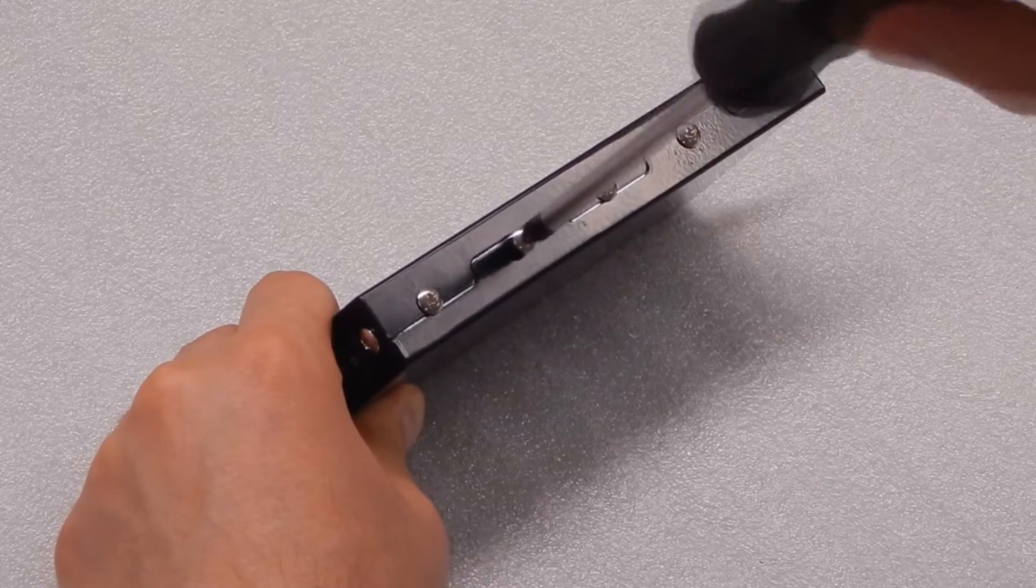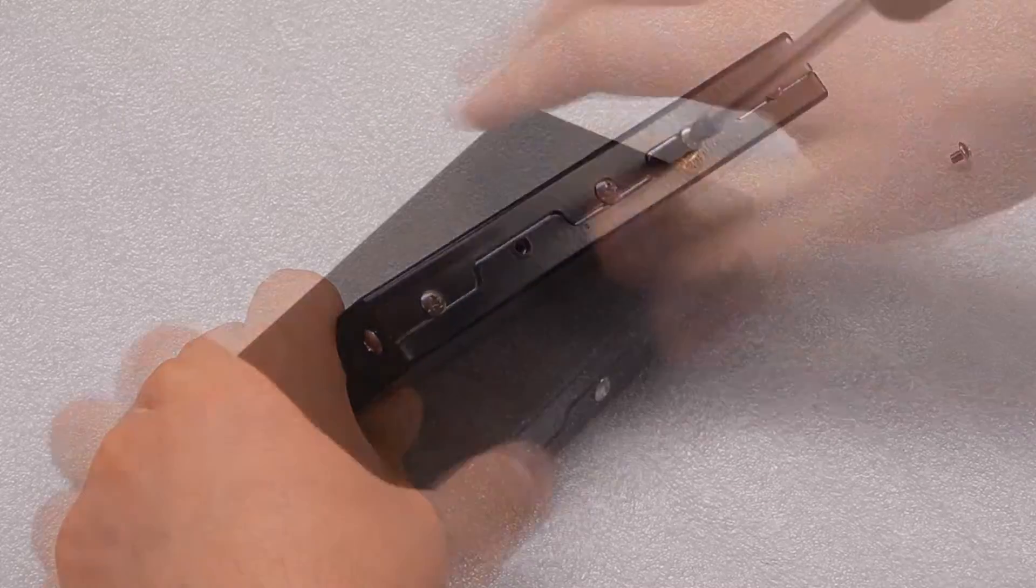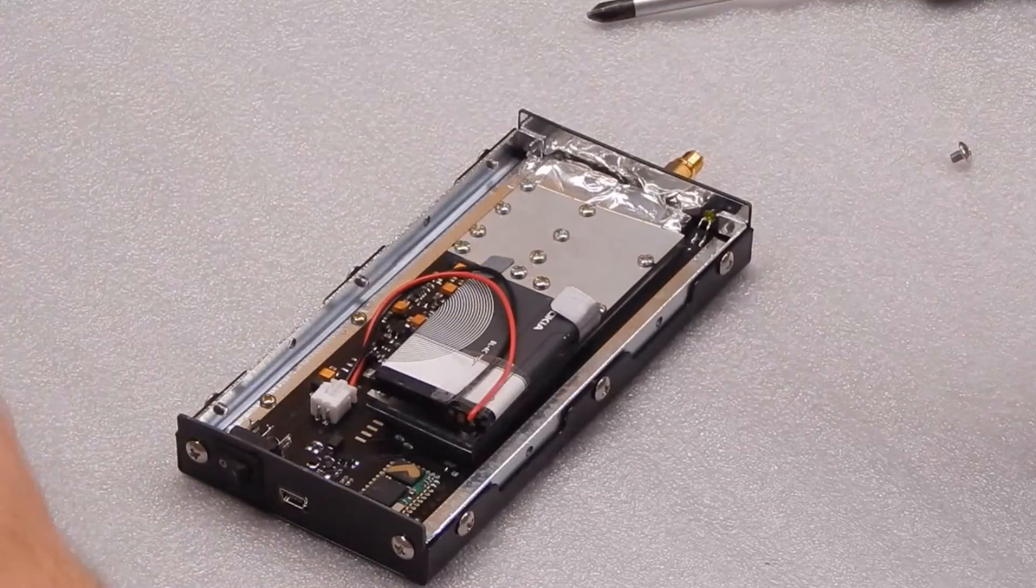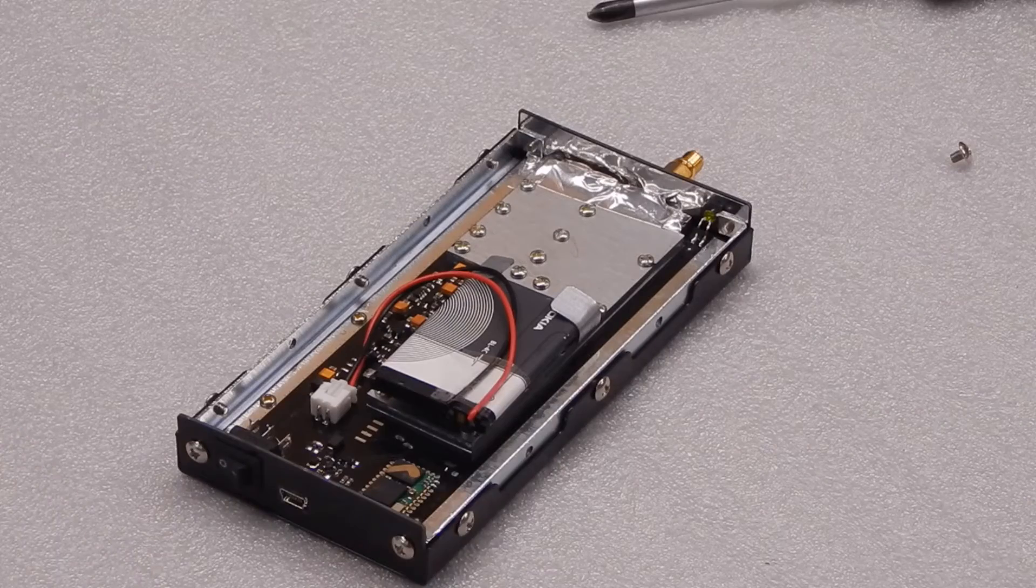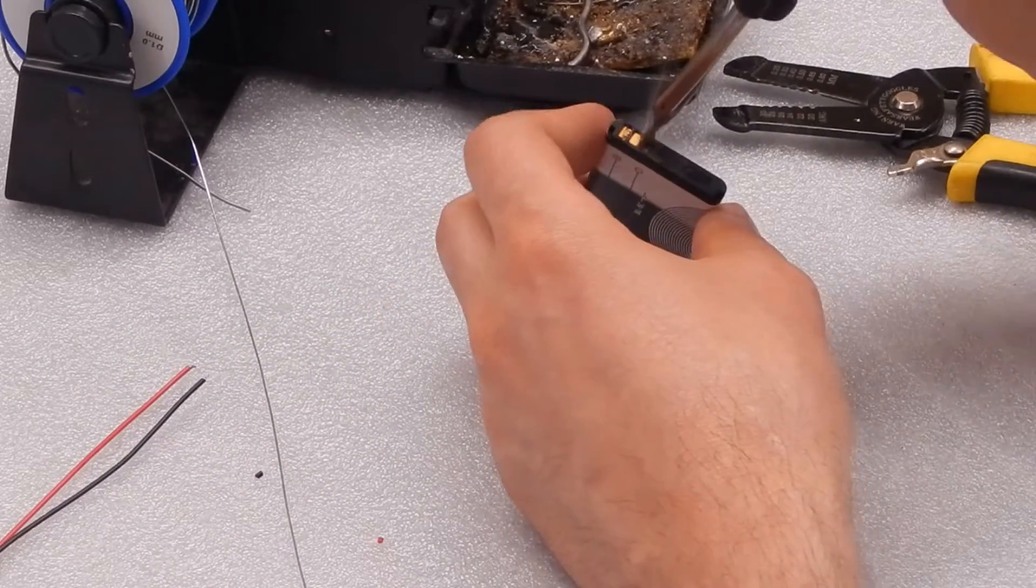To open the cover and replace the battery, you need to unscrew the 4 even screws and loosen all odd screws, making 2 turns. Then take off the upper cover. You will see the battery and the printed circuit board.